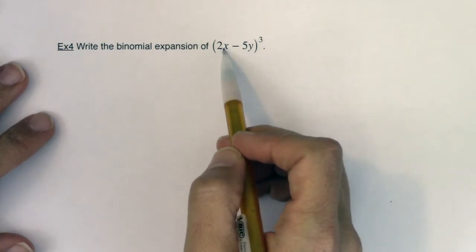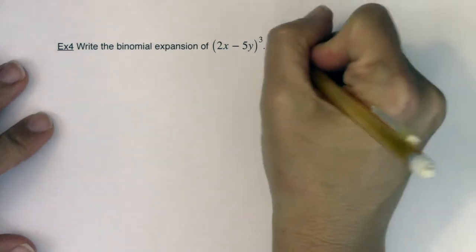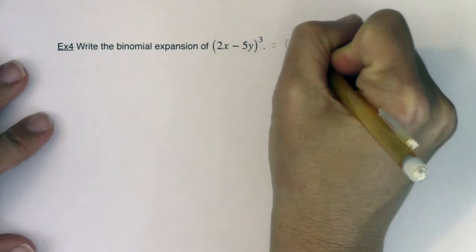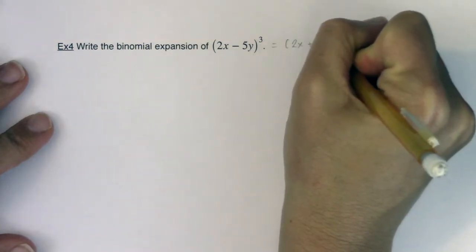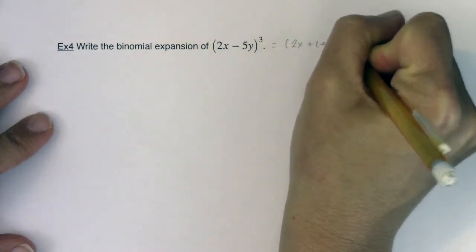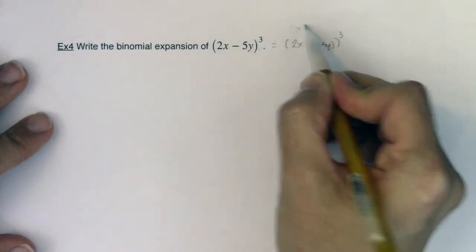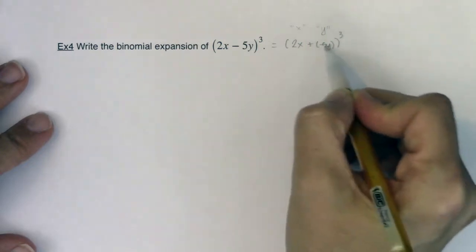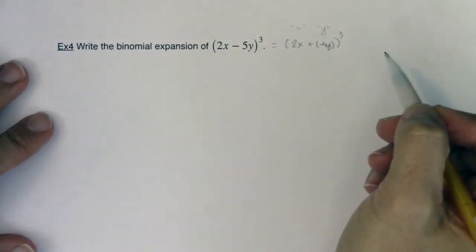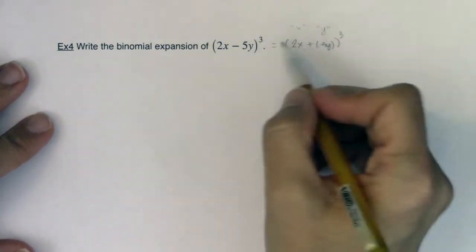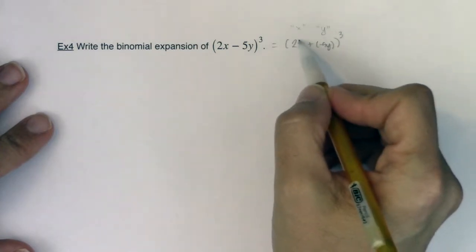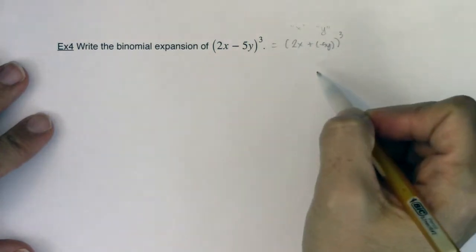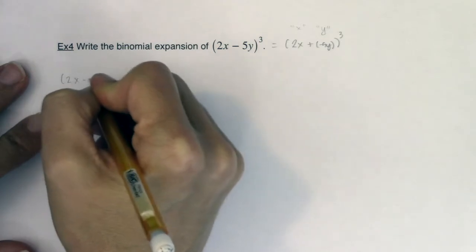But the reason it's more convoluted is that we don't just have x and y anymore, we have 2x and technically negative 5y. Because if I wanted to I could rewrite this as 2x plus negative 5y cubed. So this is our x, it's now been changed to 2x, and this is our y, it's now been changed to negative 5y, and we're going to have to adjust the binomial theorem to fit in this 2x and this negative 5y. Let's start to expand this.